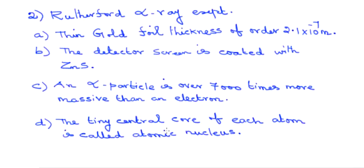Next, regarding Rutherford's alpha ray experiment, here are some bullet points. A thin gold foil is used whose thickness is of the order of 2.1 × 10⁻⁷ meter. A detector screen coated with zinc sulfide is used. When radiation falls on zinc sulfide, scintillations — bright flashes — are observed. Also, an alpha particle is over 7000 times more massive than an electron.